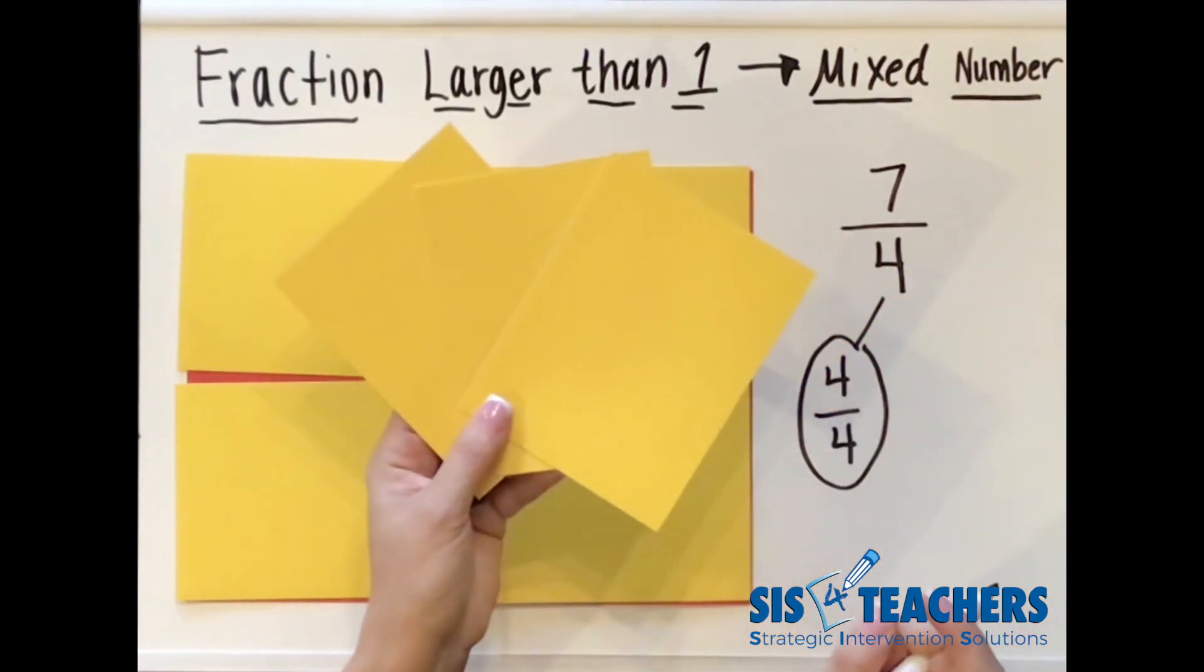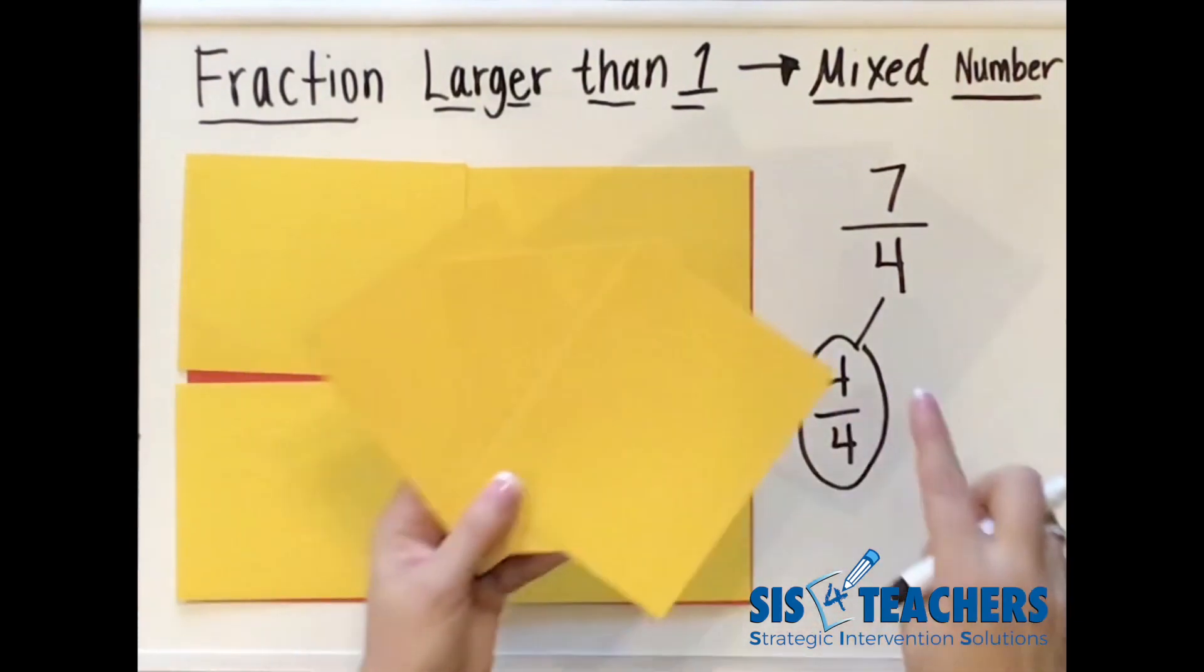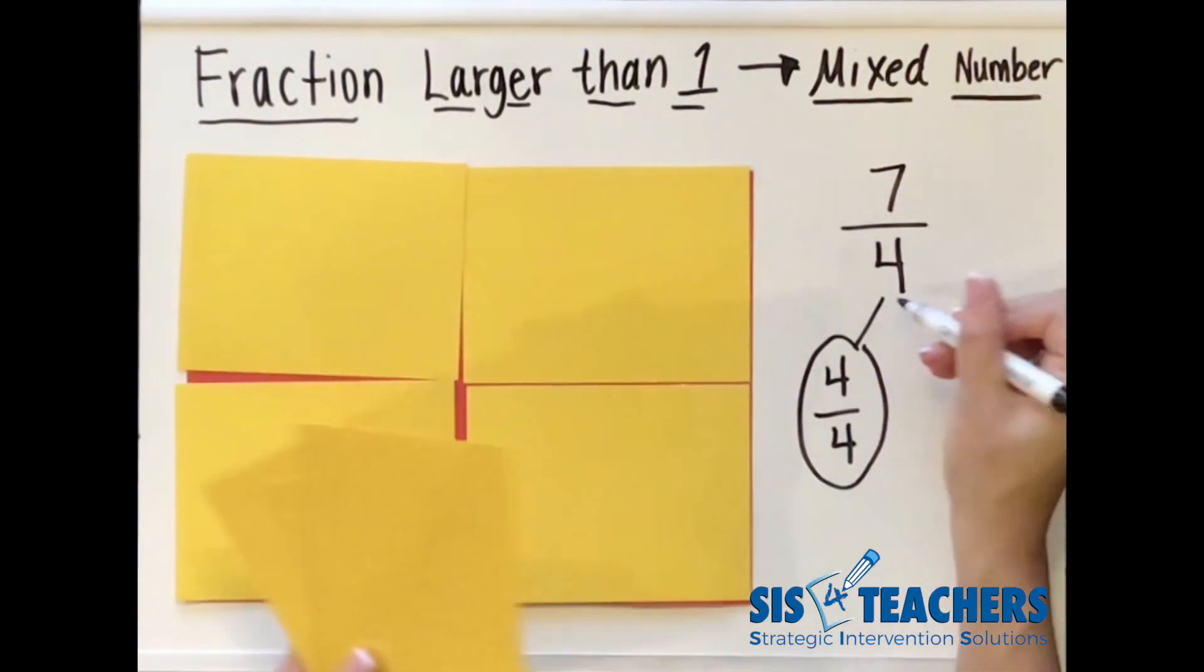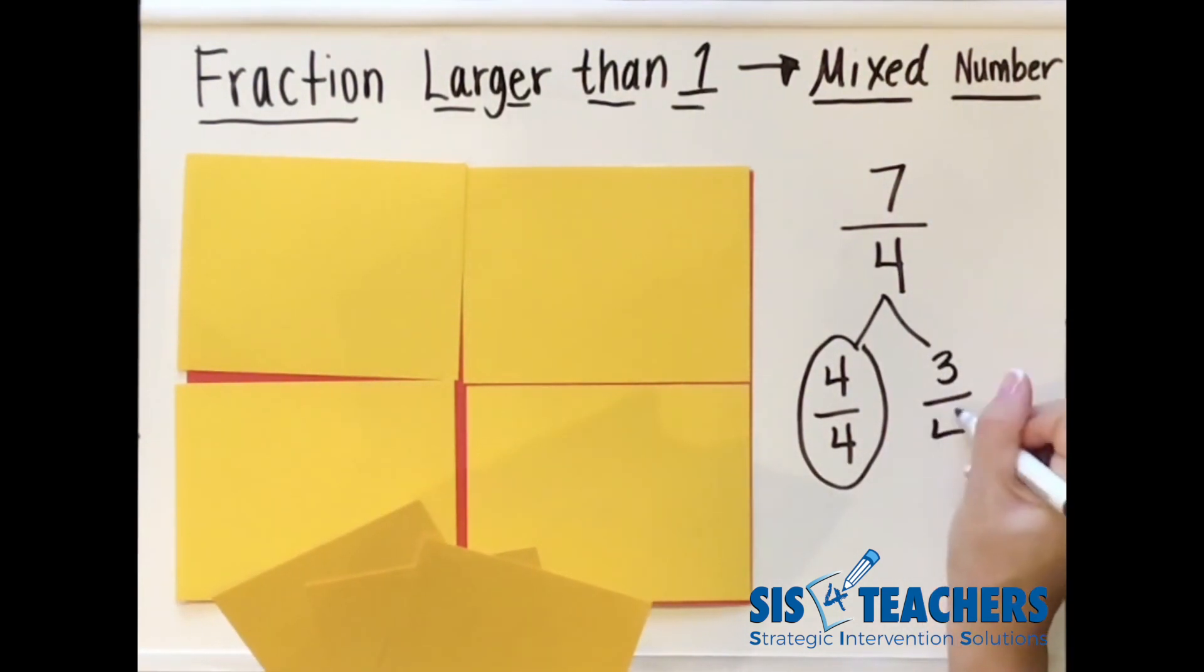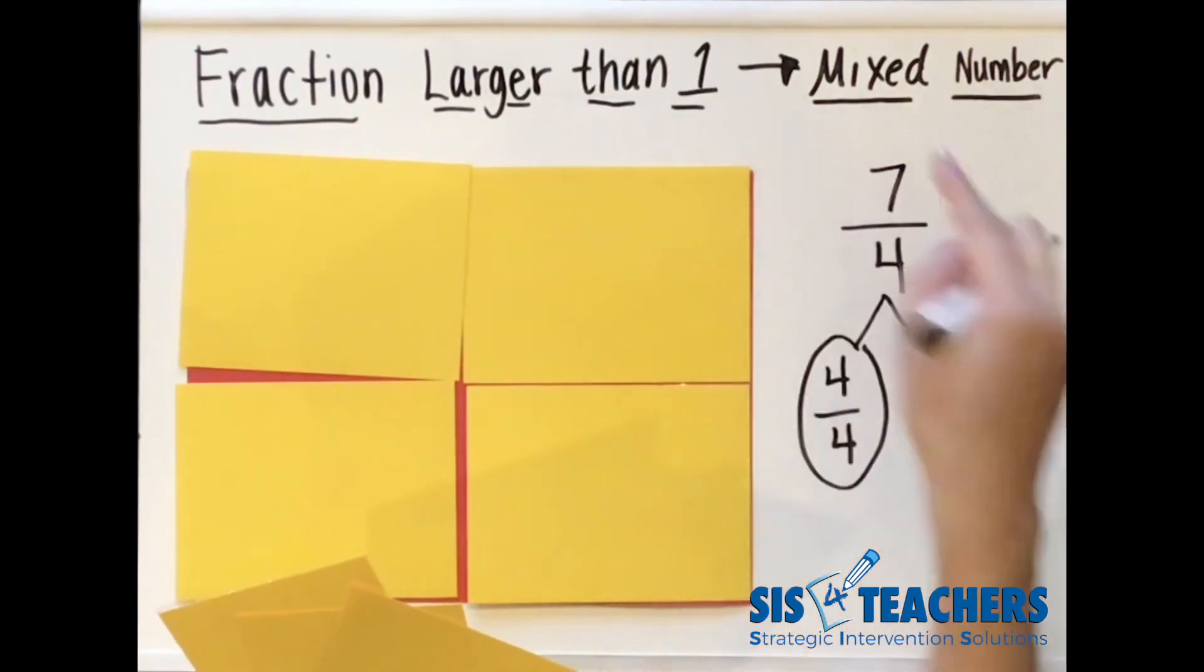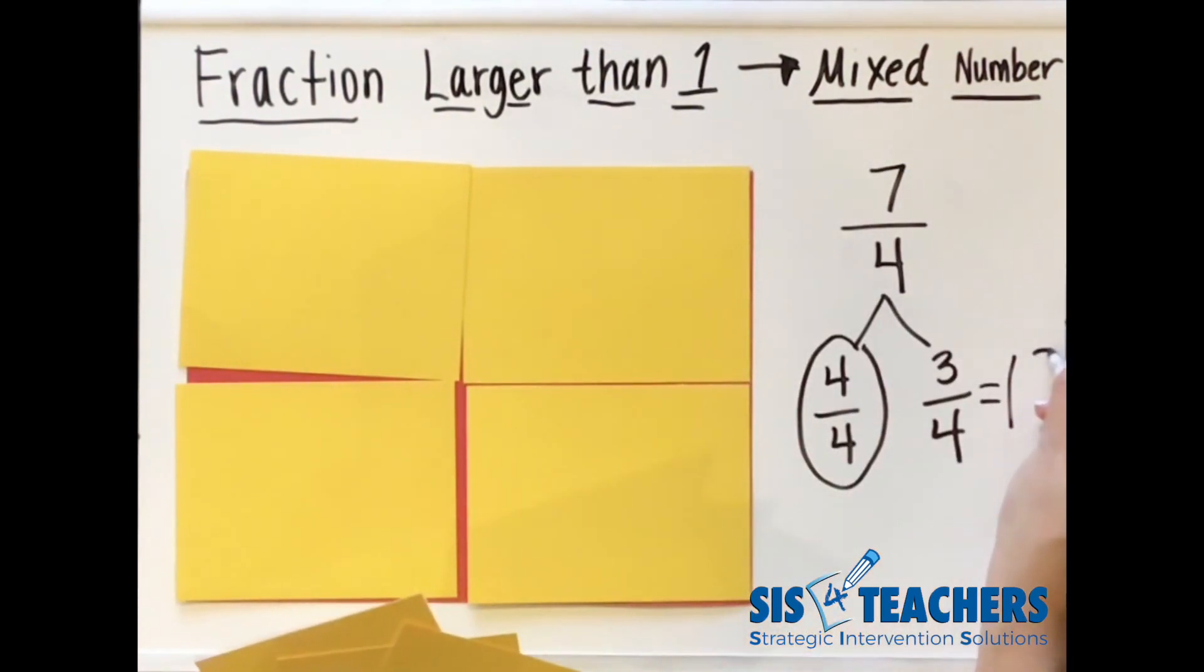How many fourths am I now left with when we originally were talking about seven fourths? I have one fourth, two fourths, three fourths. So if I decompose seven fourths into four fourths and three fourths, it would still equal what we're talking about here, which is seven fourths. Therefore, if I want to change a fraction from larger than one to a mixed number, it would be one and three fourths.